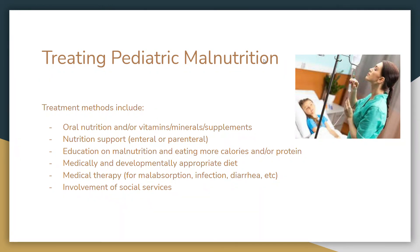There's also education on malnutrition and eating more calories and/or protein, medically and developmentally appropriate diets, and medical therapy for any of the causes we've discussed — such as malabsorption, infection, or diarrhea. There's also the involvement of social services, which usually occurs if there is parental neglect, unfortunately.